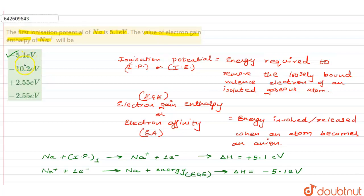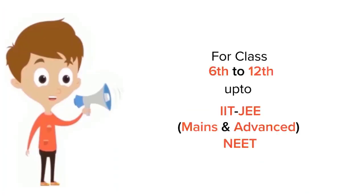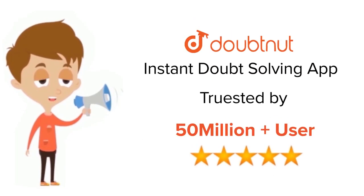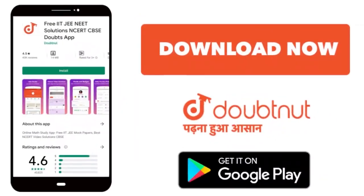So we have understood from this particular concept that IP and electron gain enthalpy are totally reverse. Okay, fine. So let us move on to the next question. Thank you. For class 6 to 12th, IIT-JEE, and NEET level, trusted by more than 5 crore students, download Doubtnet app today.